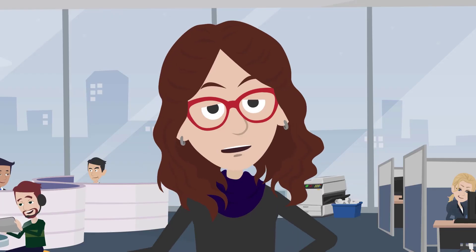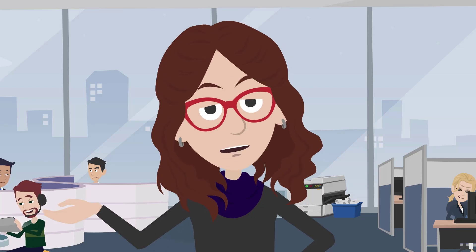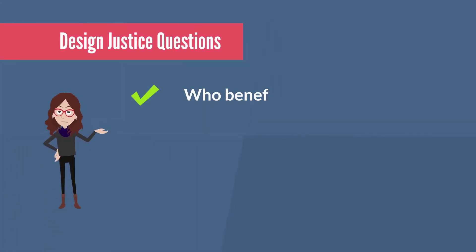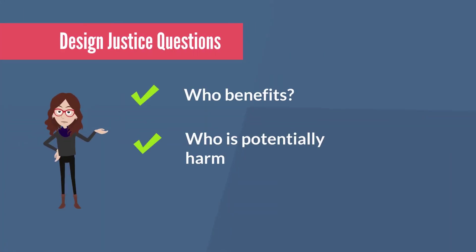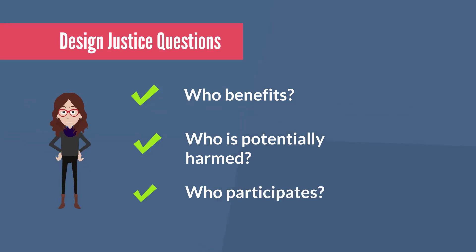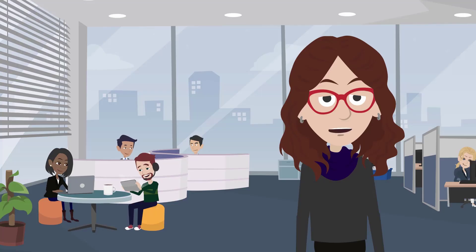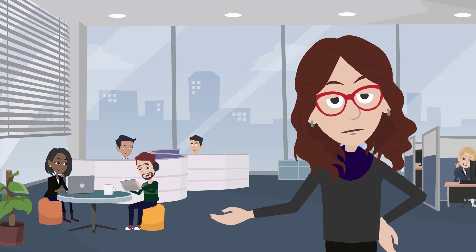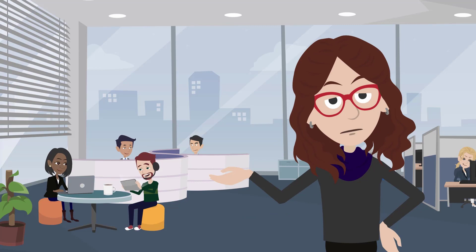As you work to understand the disability data desert in your own work, we encourage you to ask the three design justice questions: who benefits, who is potentially harmed, and who participates. These questions align with the Microsoft responsible AI principles and practices and will help your team build AI that has a positive impact. Join us in making products more accessible by building datasets and models with and by people with disabilities.